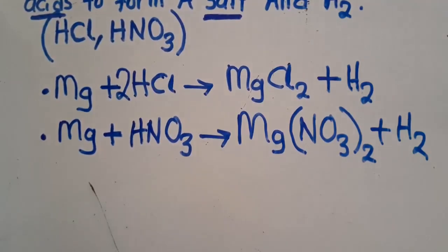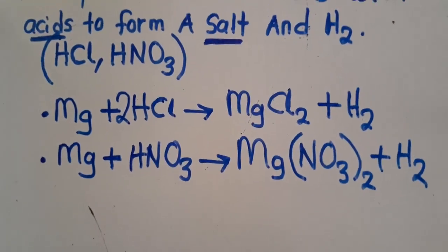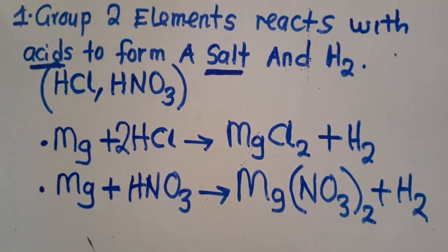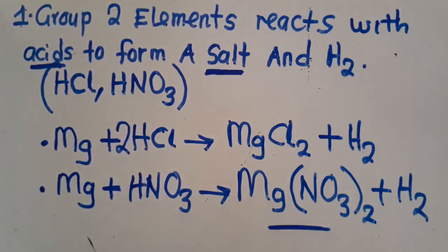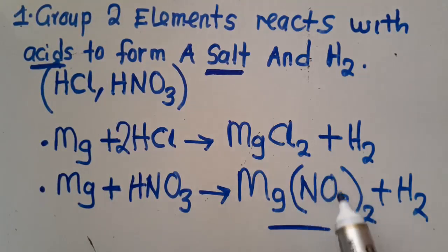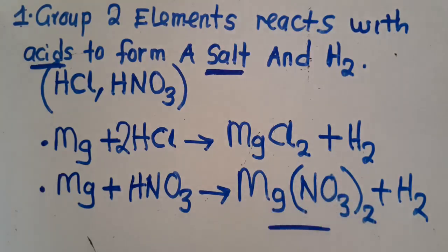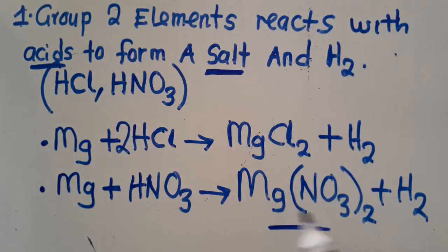This is the property we are looking at — group 2 elements react with acids to produce a salt and hydrogen gas. The correct formula for magnesium nitrate is Mg(NO₃)₂. This is how it is written. Have you seen what is formed? This is what we are talking about.